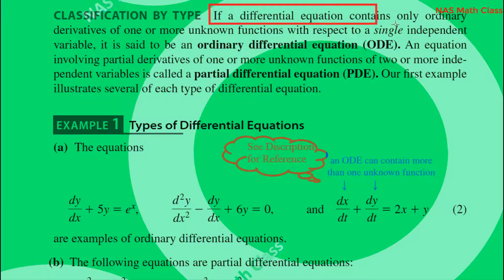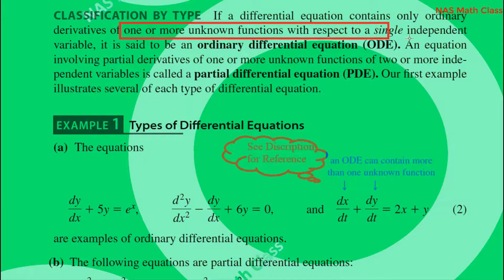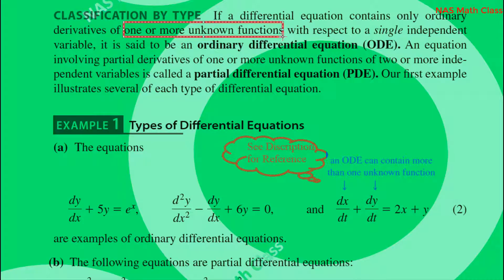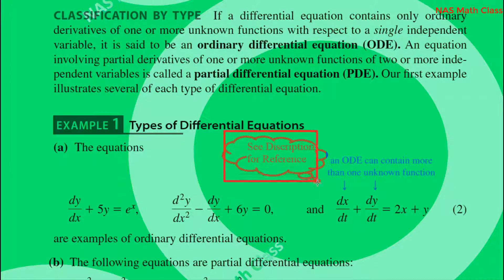If a differential equation contains only ordinary derivatives of one or more unknown functions or dependent variables with respect to a single independent variable, it is called an ordinary differential equation. So an ordinary differential equation has one or more unknown functions or dependent variables, all with respect to a single independent variable.